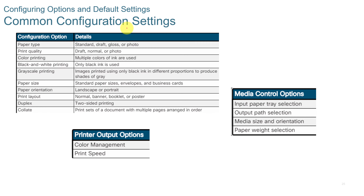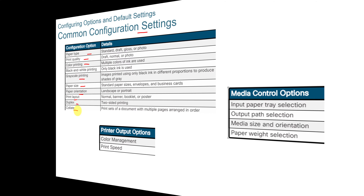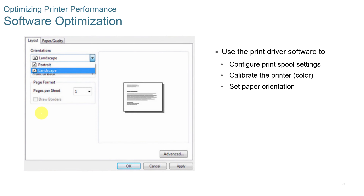Some common configuration settings on a printer include the paper type, print quality, color printing, grayscale, paper size, orientation, layout, duplex, and collating. You can use software optimization to change settings on the printer — changing it from portrait to landscape, changing which tray it uses, and changing the paper and quality settings.